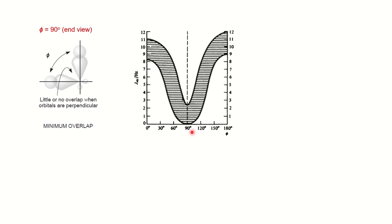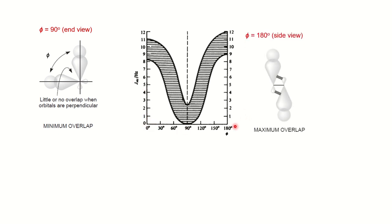Why is the J coupling value essentially 0 at 90°? At 90°, the p-lobes of the two carbons are perpendicular to each other, and the orbitals of the two hydrogens have no overlap. Minimum orbital overlap means the coupling is weakest. At 180°, you can see from the side view that the coupling is maximum and the J value is largest.